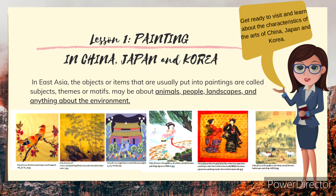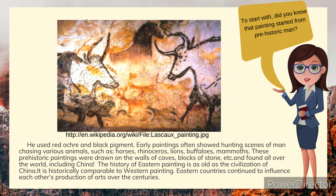Get ready to visit and learn about the characteristics of the arts of China, Japan, and Korea. Lesson 1: Painting in China, Japan, and Korea. In East Asia, the objects or items usually put into paintings are called subjects, themes, or motifs — about animals, people, landscapes, and anything about the environment. Painting started from prehistoric man, who used red ochre and black pigment. Early paintings often showed hunting scenes of man chasing various animals such as horses, rhinoceros, lions, buffaloes, and mammoths. These prehistoric paintings were drawn on the walls of caves, blocks of stone, and found all over the world, including China.